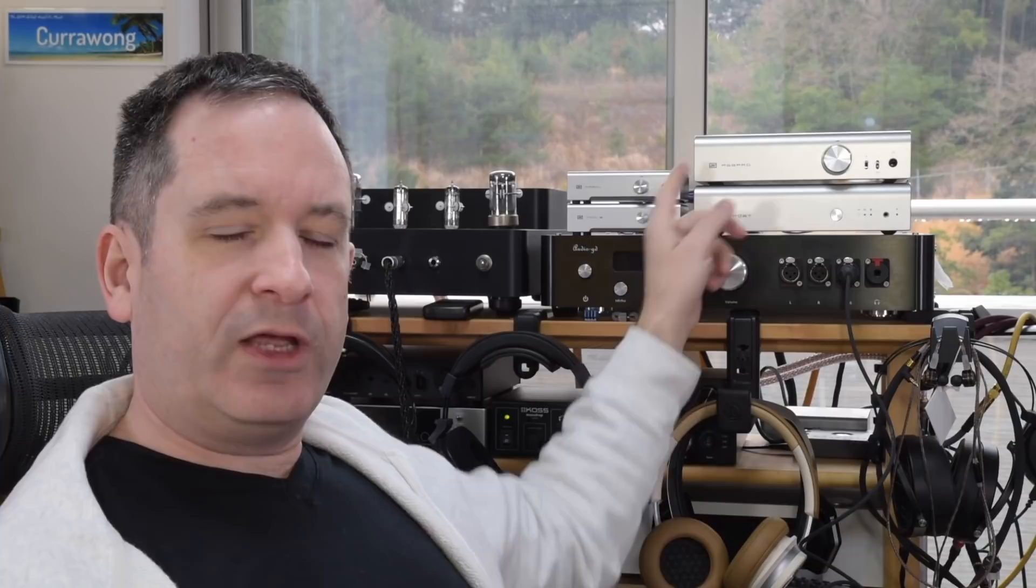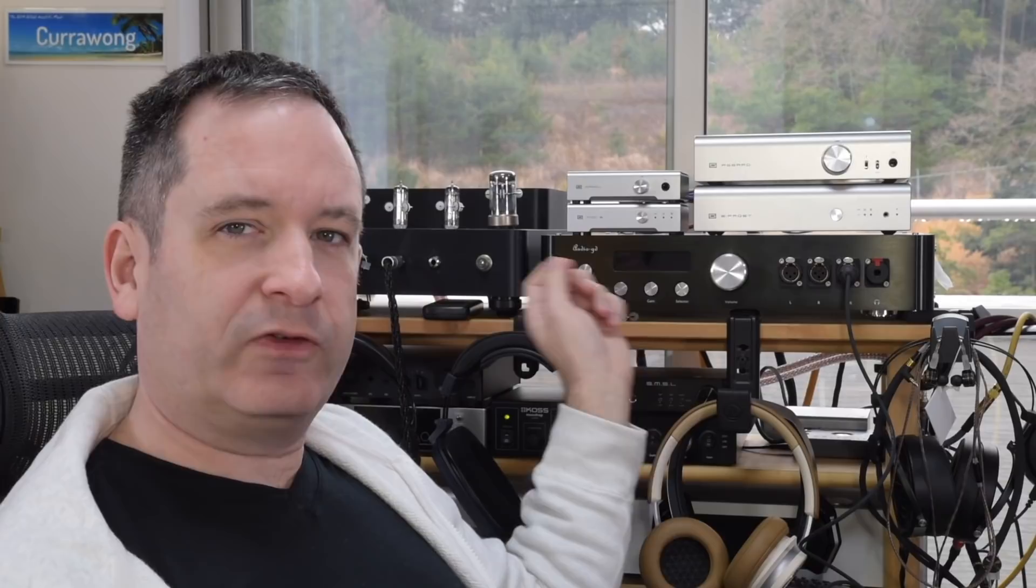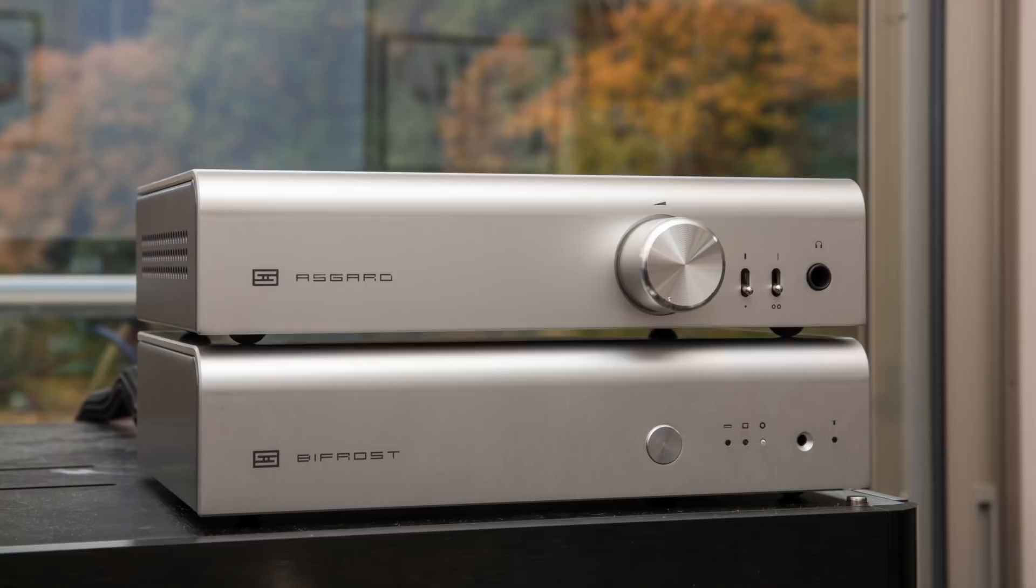In the past I've reviewed each of these components and compared the two different amps and how they perform, and the two different DACs and how they perform. But I've never actually compared an entire setup. So what's the difference between the smaller Magni 3 Plus and Moddy Multibit setup and the $550 more expensive Asgard 3 and Bifrost 2 setup? That's what I aim to find out.